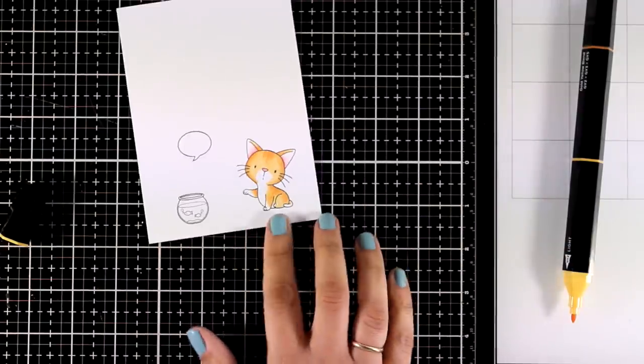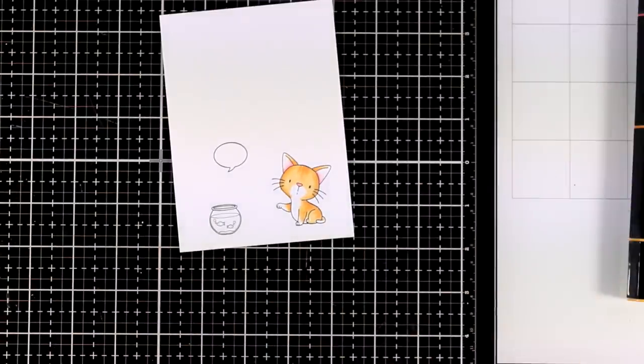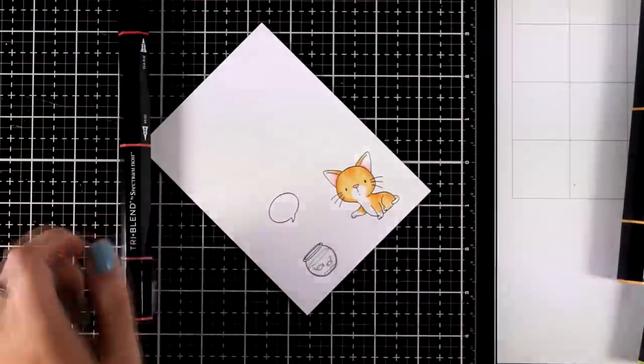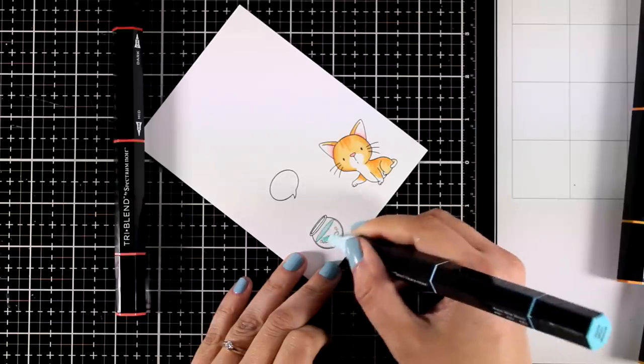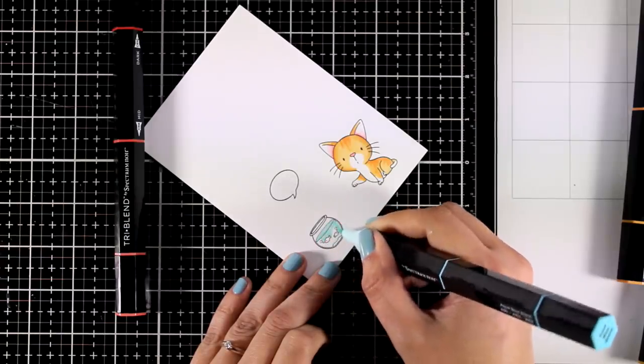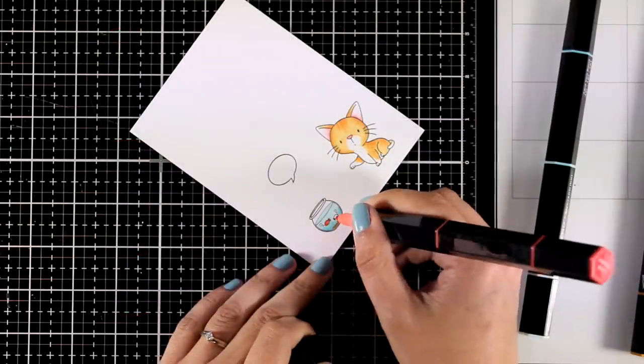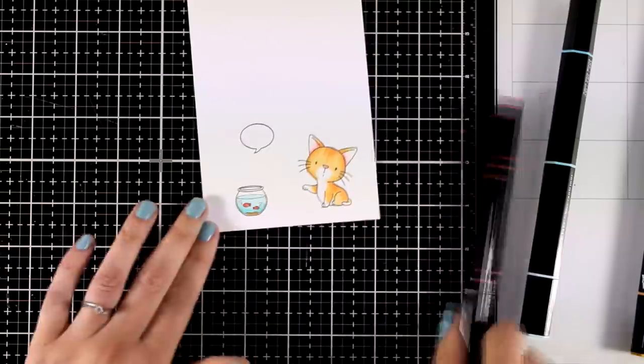And I think my cat turned out super adorable! And there is just the fishbowl for me to color. For that I will use the Aqua Blue Blend for the water and the Coral Shade for the fish. I will use the matching dies to cut out all my images.